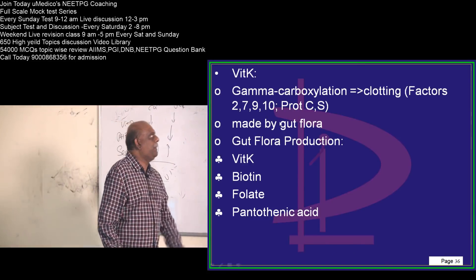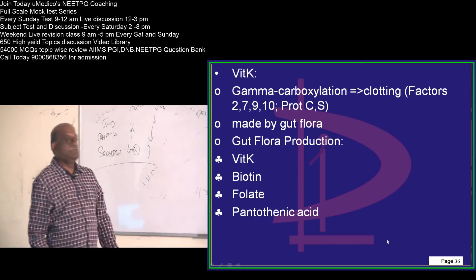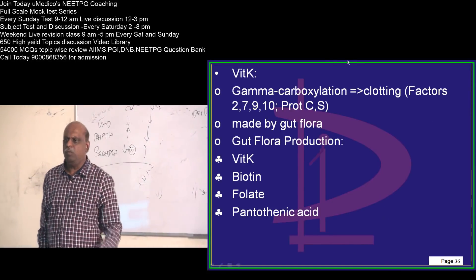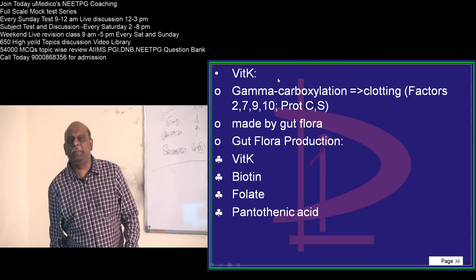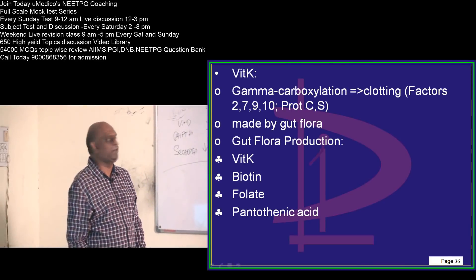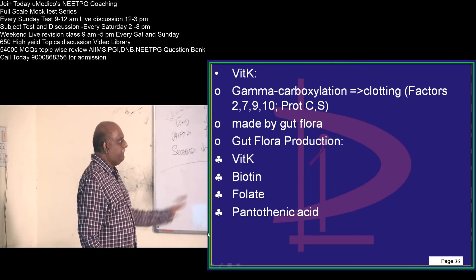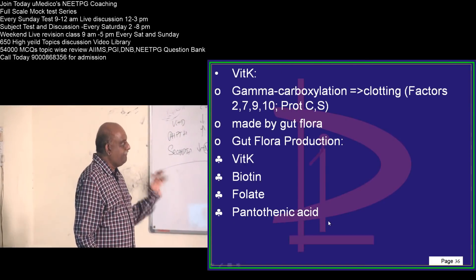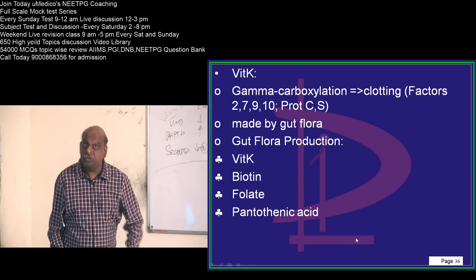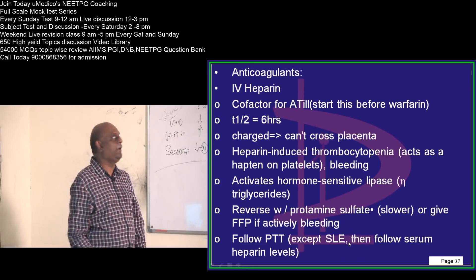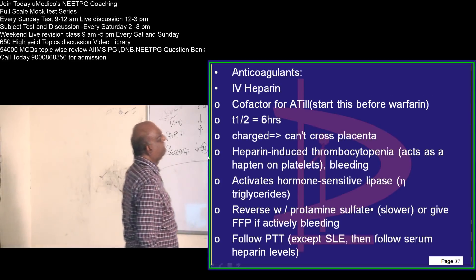Vitamin K is made by the gut flora. What are all the vitamins that are gut-flora dependent for their production? Vitamin K, biotin, folate, and pantothenic acid are also dependent on gut flora.